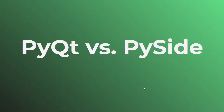Hello everyone, welcome back to my channel. In today's video, I'm going to compare PyQt versus PySide. These two are very popular Python libraries for building graphical user interfaces or GUIs. They are technically based on the same thing, so they have tons of similarities but also some differences. I will cover what makes them similar, what makes them different, how to choose between the two, and also talk about some differences in licensing and what it would cost to distribute and release an application with either of these libraries.